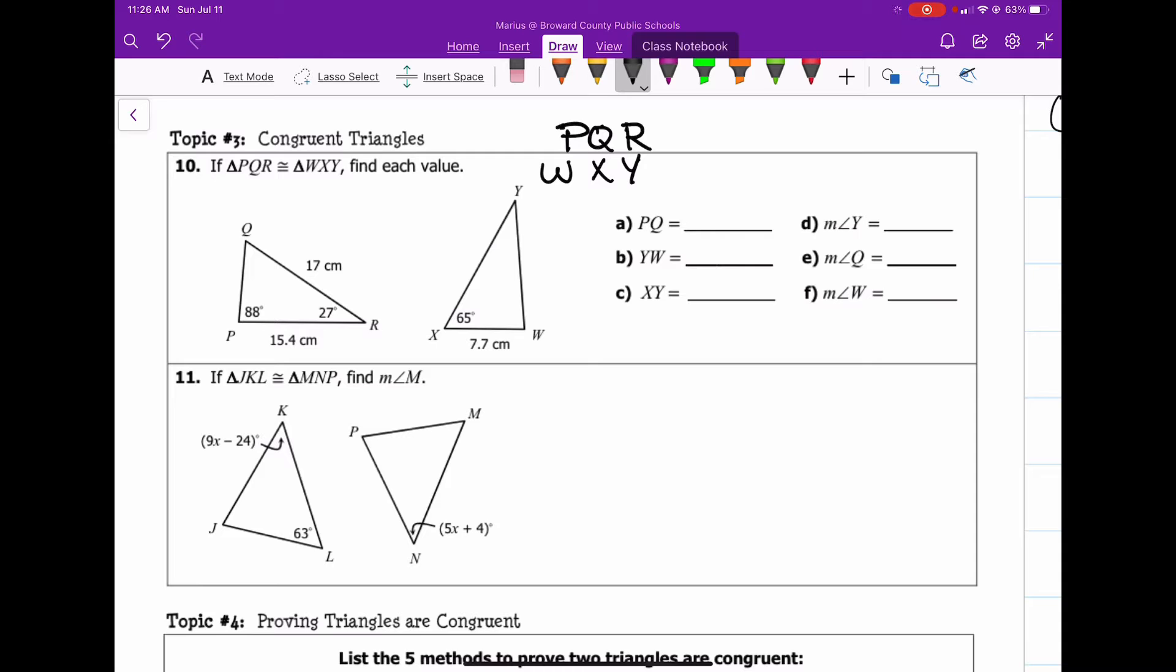Now, when we do these, when we try to figure out A through F, I'm just going to use a highlighter and do this. Like PQ is the same as WX. So PQ is the same as WX. So that's 7.7.